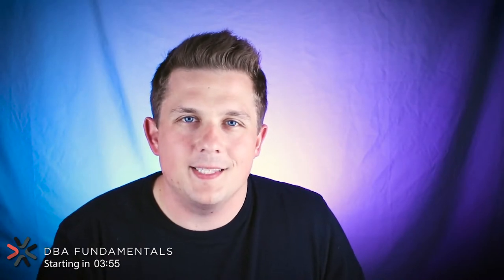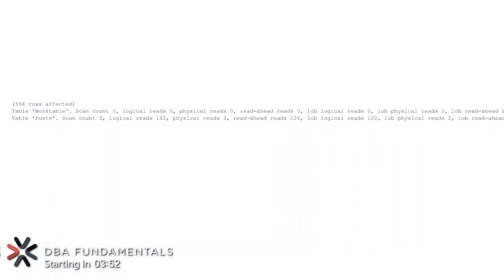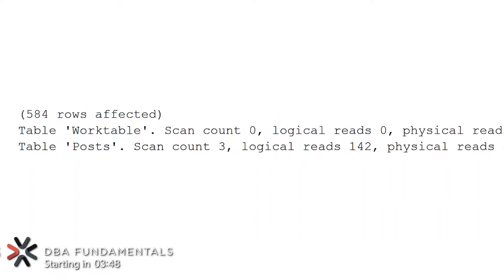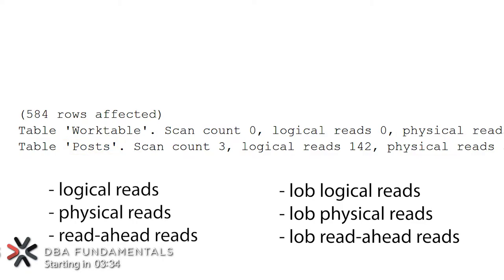This section of the statistics will show all of the different pages that were read by your SQL query. If a query is reading from tempdb, that's going to be denoted by either the work table or work file lines. All of your other tables will just be listed by their table name, and for each one of those tables you'll see six values displayed. Let's go through what each one of these measurements represents.